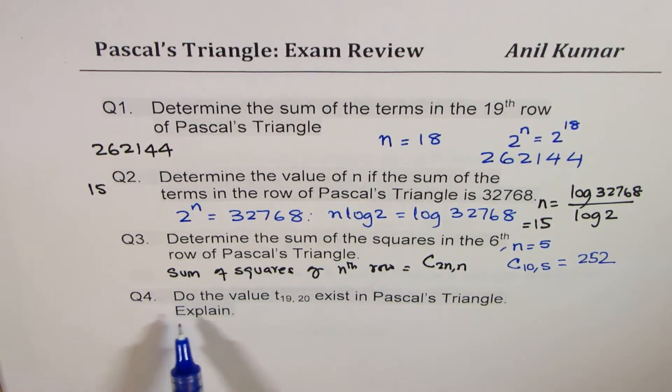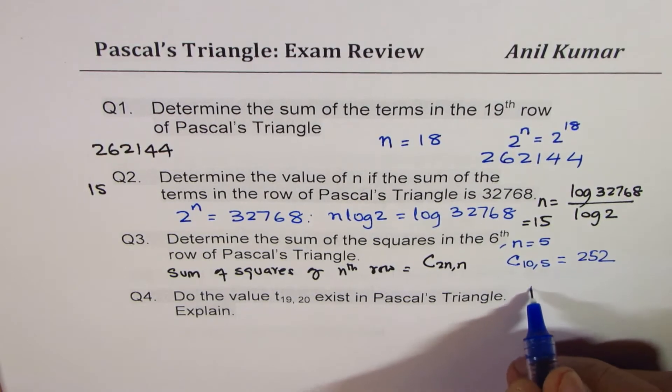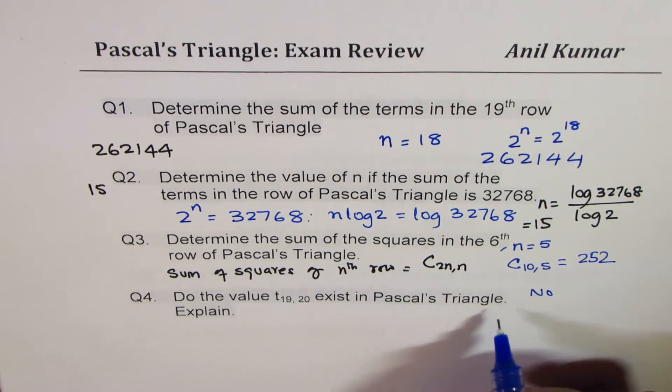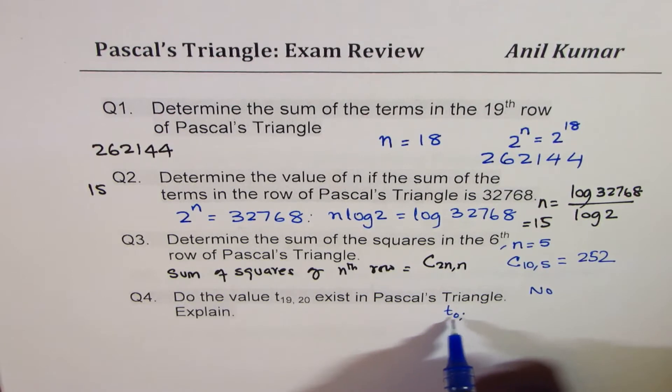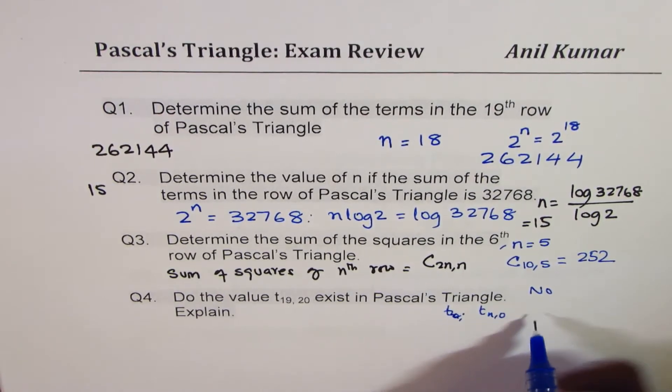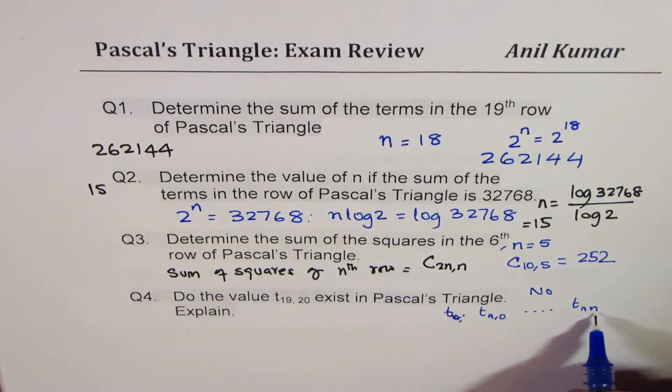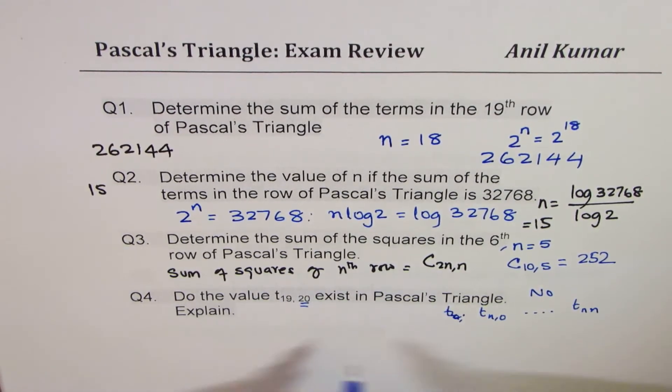Question number 4 here is, do the value of t1920 exist in Pascal's Triangle? Explain. Well, the answer is no, it does not exist. Since in Pascal's Triangle, you actually go from tn0 to tnn.